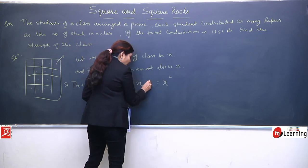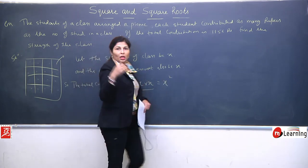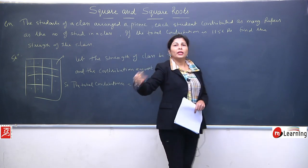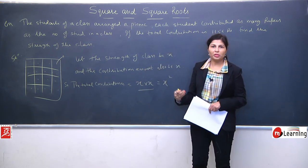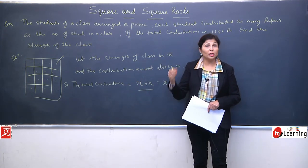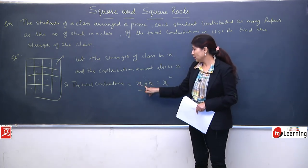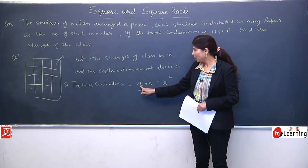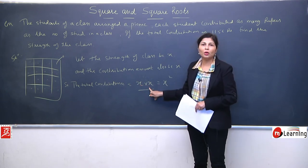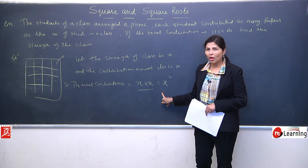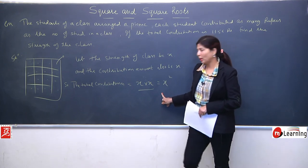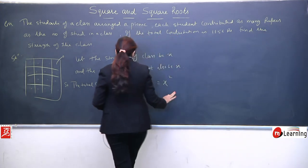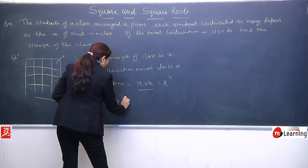So what will be our total contribution? x into x, which means x square. So we'll write: the total contribution is x into x means x square. Let me explain again. There are 10 students. If each student gave 20 rupees, total contribution will be 200, means 10 into 20, 10 into 20. Similarly, here however many students, that much contribution. So it becomes x into x, which equals x square.